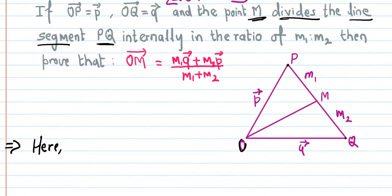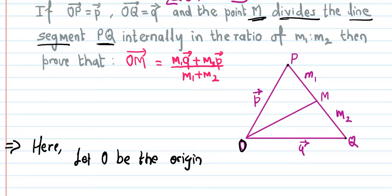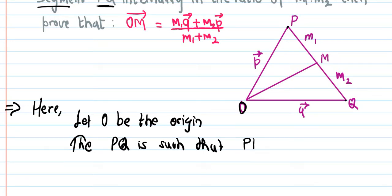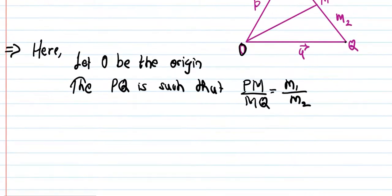Let O be the origin. Then PQ is such that PM upon MQ — here PM corresponds to M1 and MQ corresponds to M2 — so the ratio is M1 is to M2. We will use this ratio to calculate and prove the result.